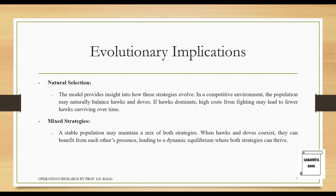Mixed strategies: a stable population may maintain a mix of both strategies. When Hawks and Doves coexist, they can benefit from each other's presence, leading to a dynamic equilibrium where both strategies can thrive. Generally, both survive because there will be a dynamic equilibrium where Hawks and Doves learn to coexist.